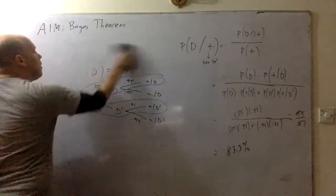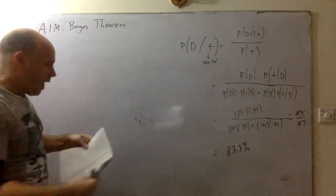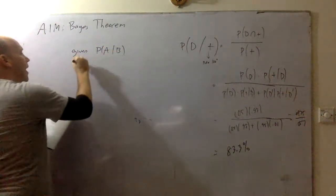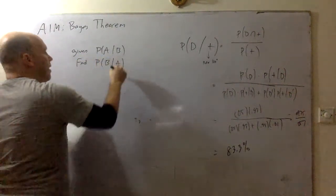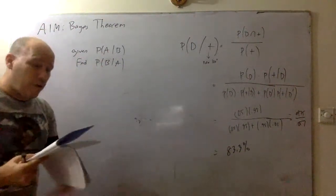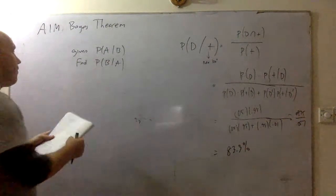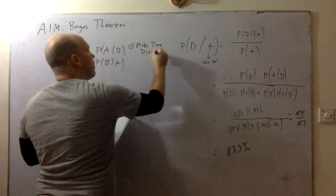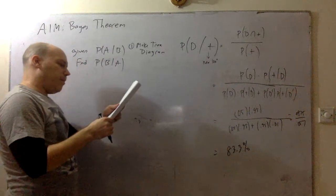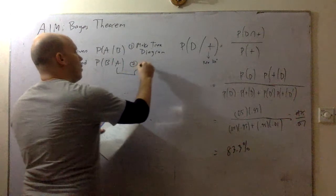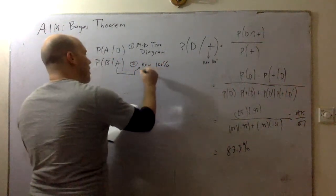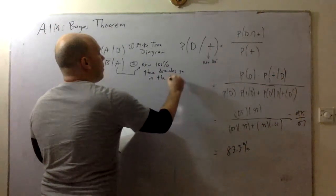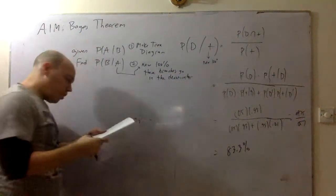First, make a tree diagram. And then this is the new 100%, and these branches go in the denominator. Let's try another one.